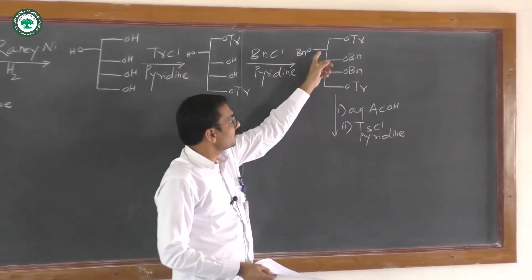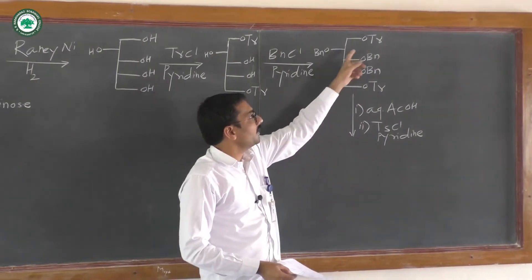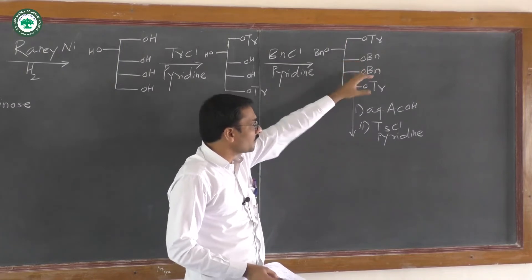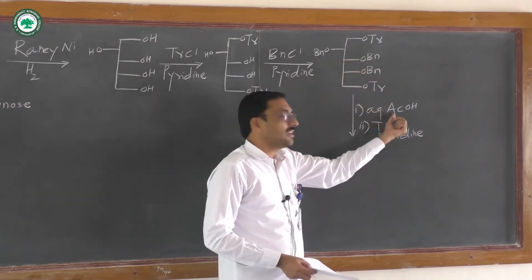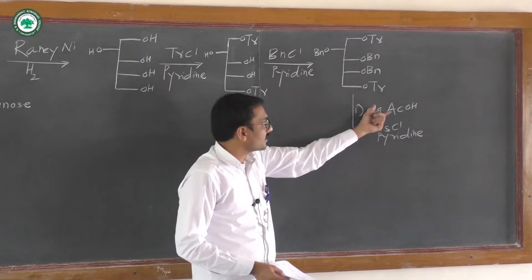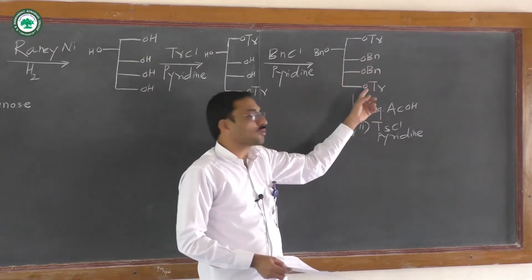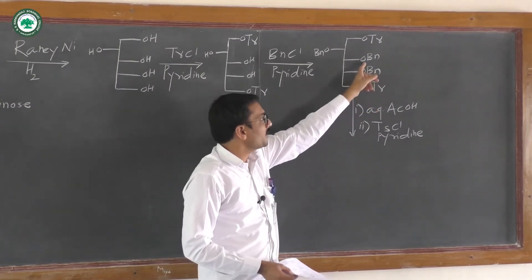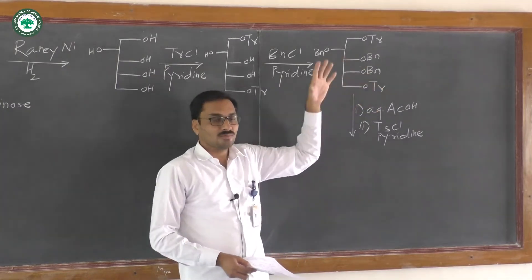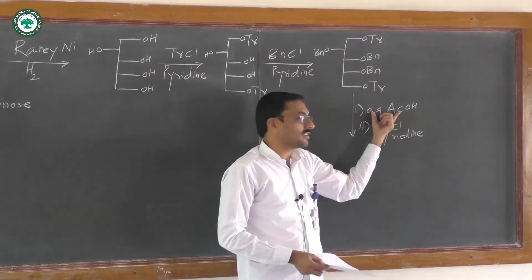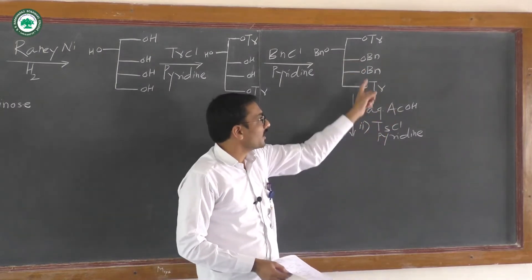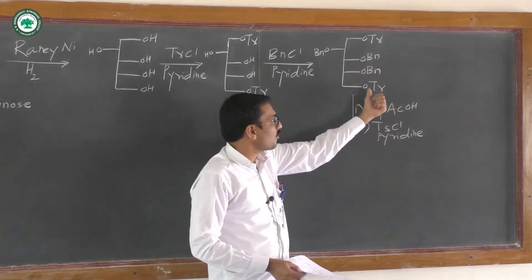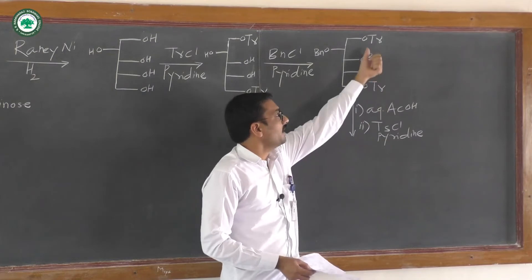This compound containing OTr and OBn groups is then allowed to react with aqueous acetic acid. Under aqueous acetic acid conditions, the OTr groups undergo deprotection to form the corresponding OH groups. The OBn groups are stable towards acidic conditions, so only the OTr groups are deprotected, yielding the corresponding diol.